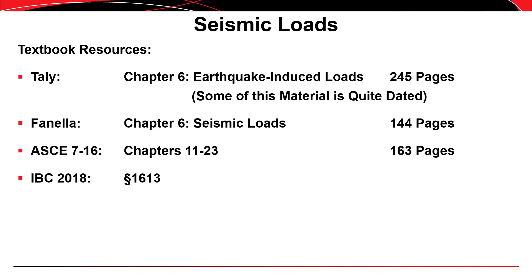Within ASCE 7, it's Chapters 11 through 23 that deal with seismicity — 163 pages. The International Building Code 2018 covers seismic material in Section 1613. I'll be discussing ASCE 7 exclusively here, but you should note that IBC is very similar to ASCE 7 when it comes to earthquakes and seismic loads.